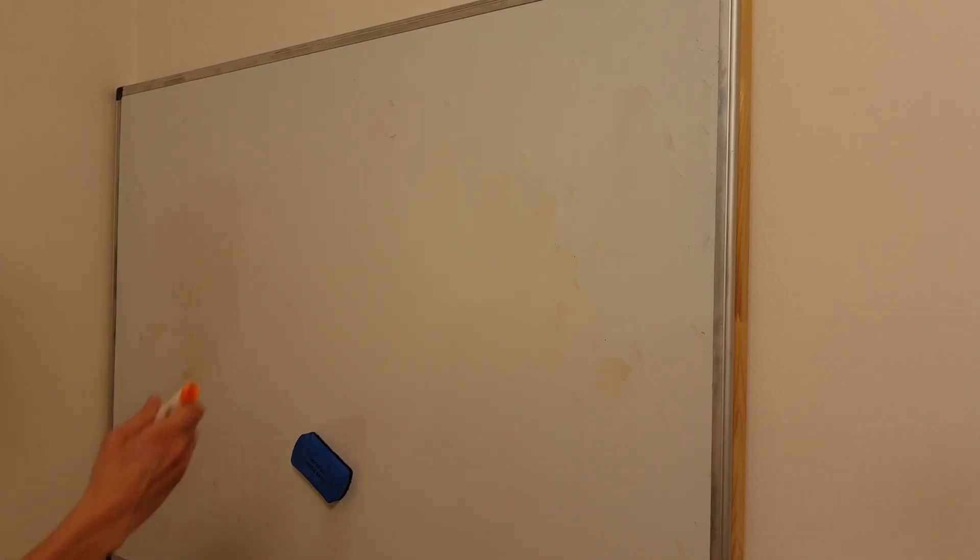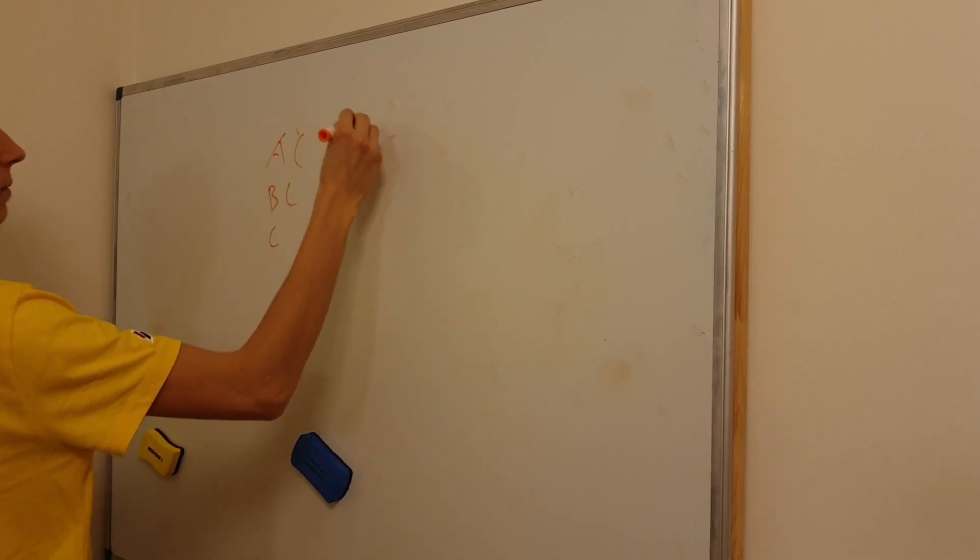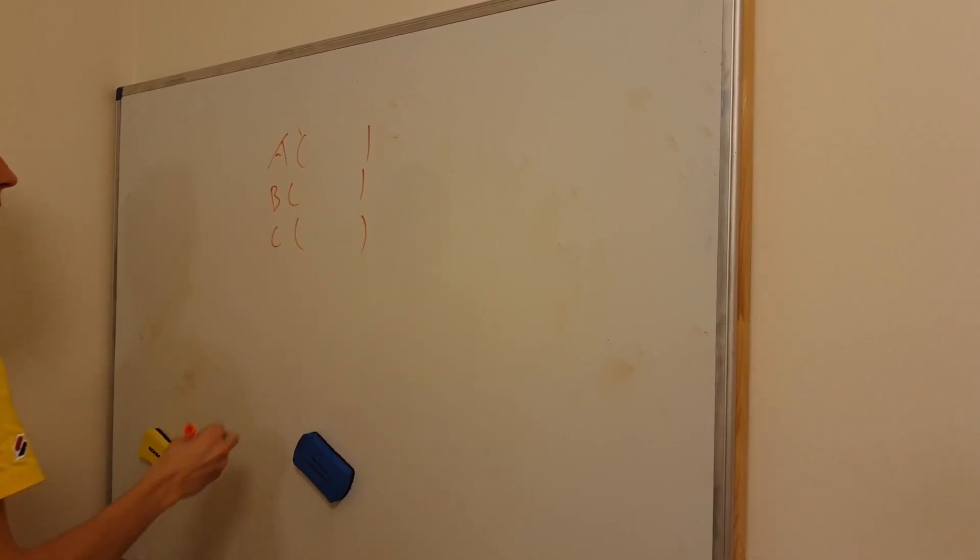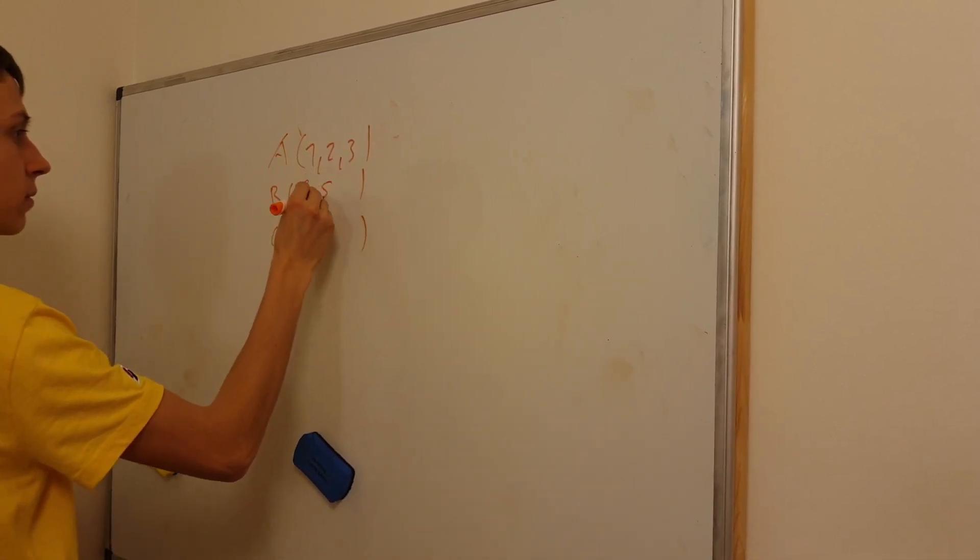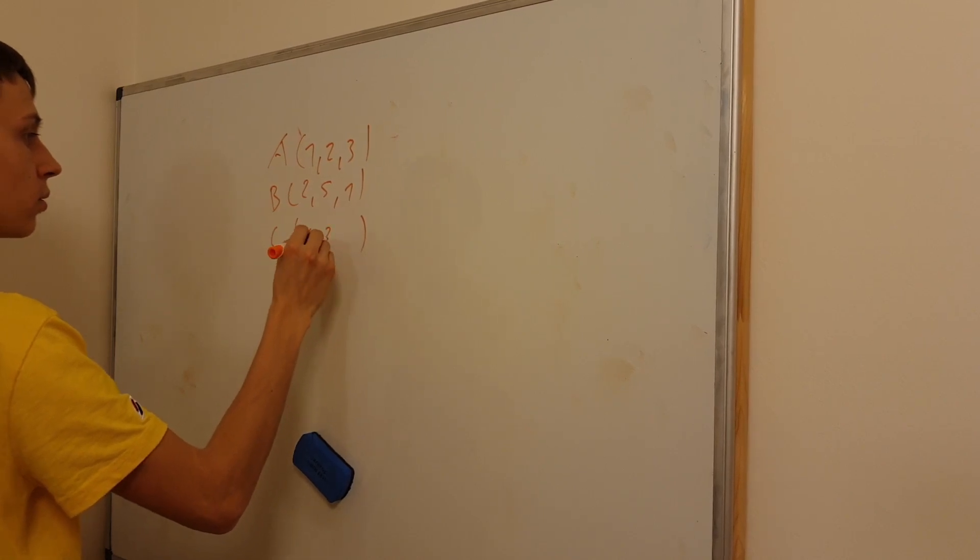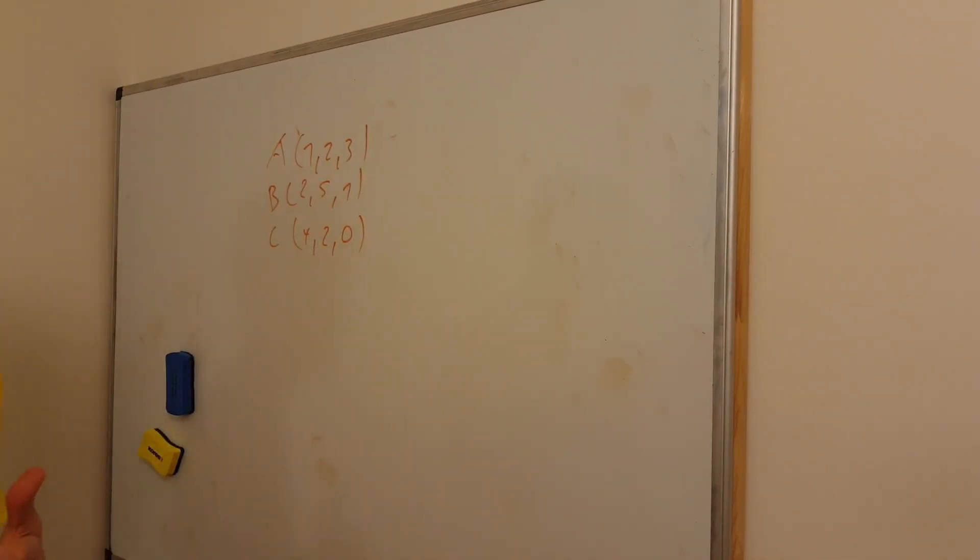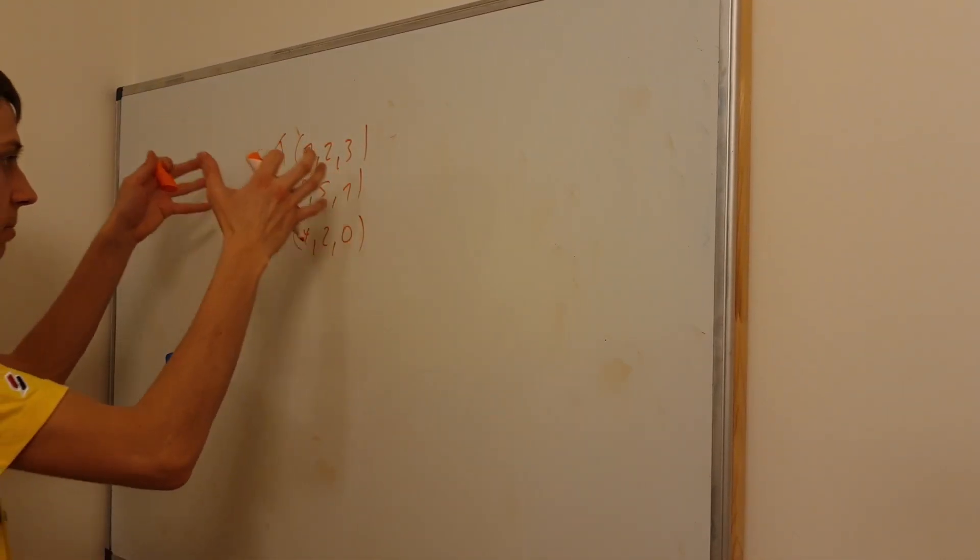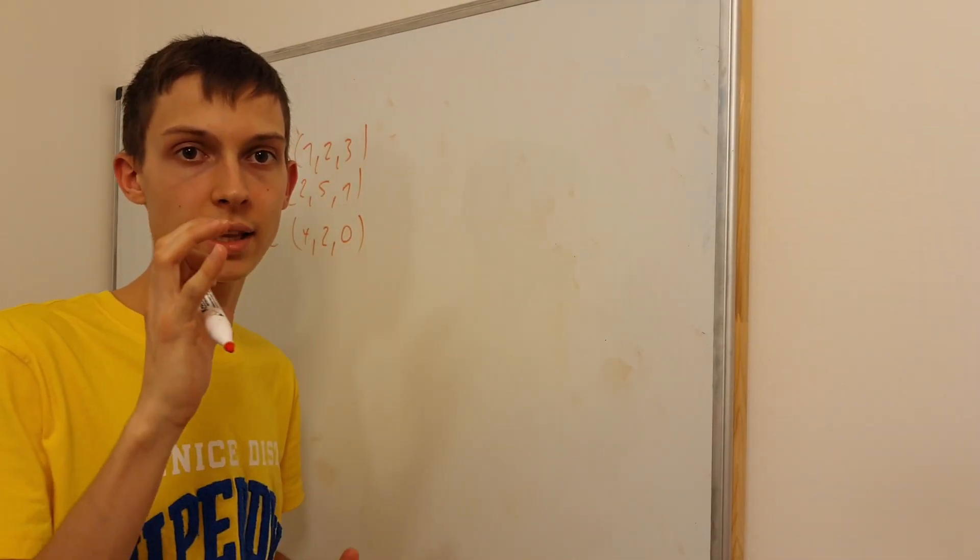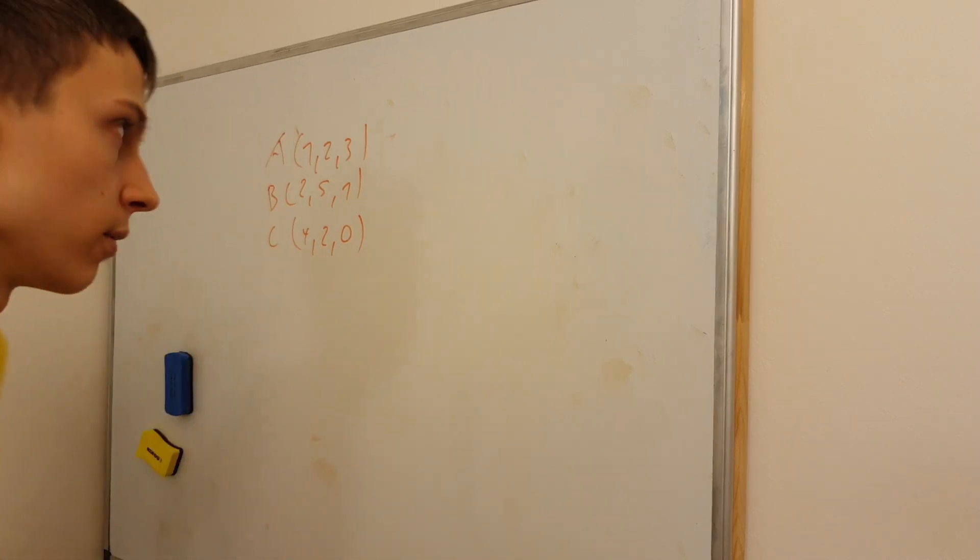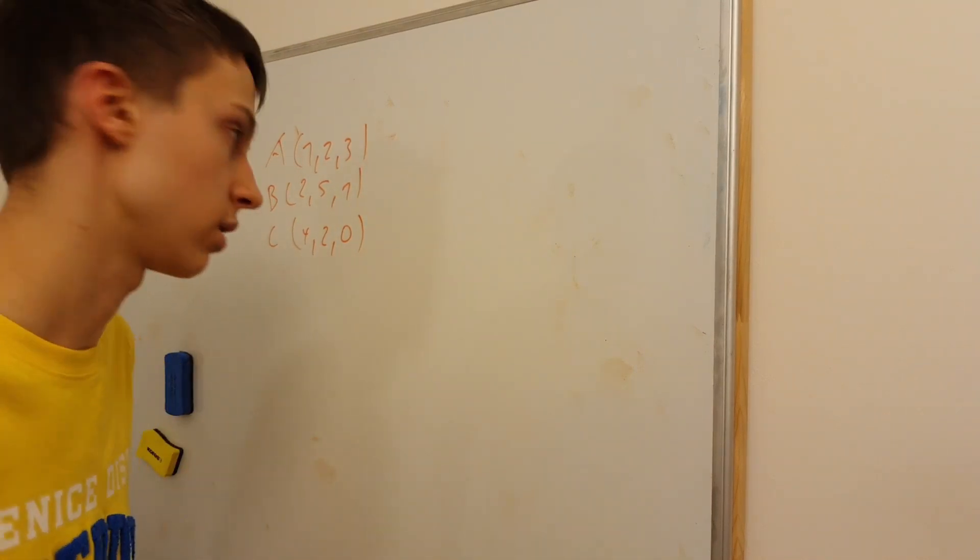It's a well-known fact that when you have three points, let's say A, B, and C in 3D space, so each have three parameters and they're different points, you can construct a plane that contains these three points. It's basically the information that's enough in order to know a certain plane, to construct a plane.